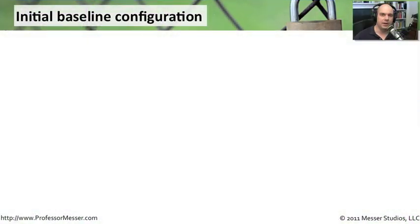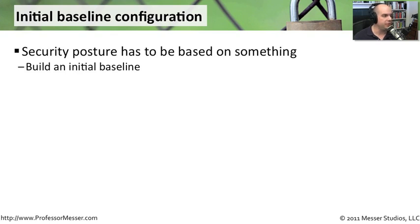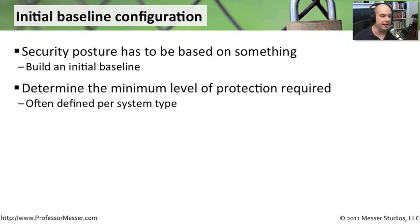When you're building out a security posture, it has to be based on something. One of the first things you'll do is build an initial baseline of what you would like your security to be. This often takes a lot of planning and a lot of thought. You have to look at the requirements that you have, the things that you need to protect. There's generally a minimum level of protection you're thinking about for the data and the systems that you have in place.